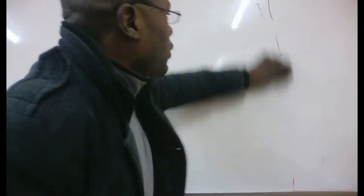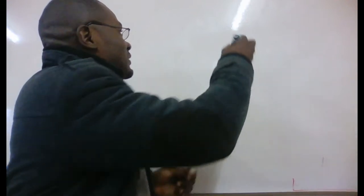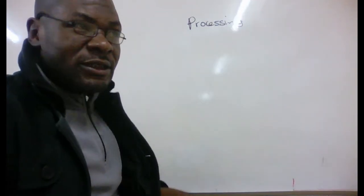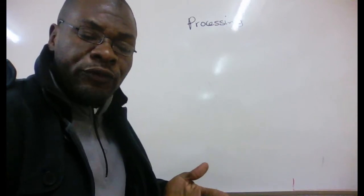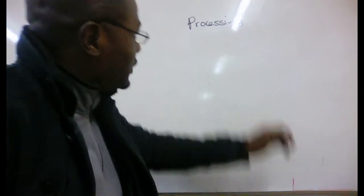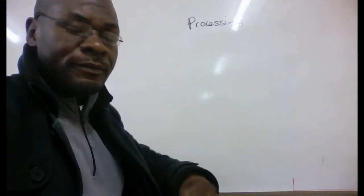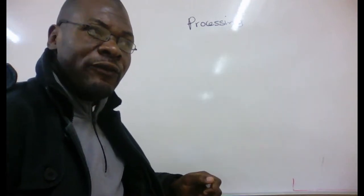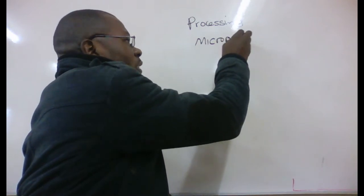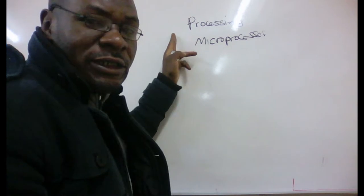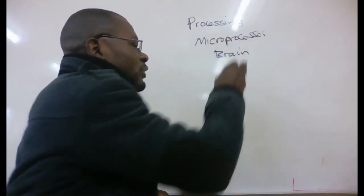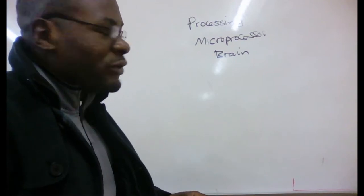So to begin with, we will start with looking at the processing stage. Processing refers to the conversion of raw facts and data into meaningful information — this is where data is converted into information. At the processing stage there is a very important component known as the microprocessor. It is the main component found at the processing stage, and the microprocessor is famously known as the brain of the computer. Basically, that's what people refer to as a CPU, but its real name is the microprocessor.